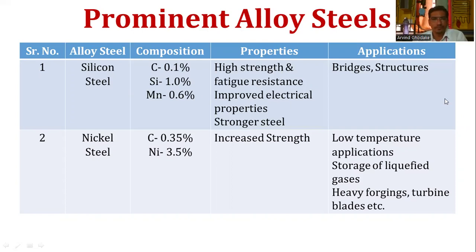Applications of silicon steel include bridges and structures used in the construction industry. The second alloy steel is nickel steel, which contains 0.35 percent carbon and 3.5 percent nickel. Its properties include increased strength and suitability for low temperature applications. Applications include liquefied gases, heavy forgings, and turbine blades.